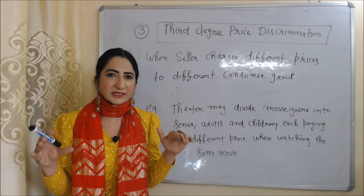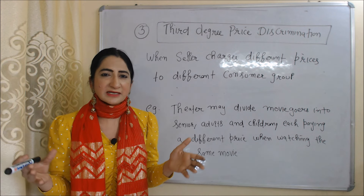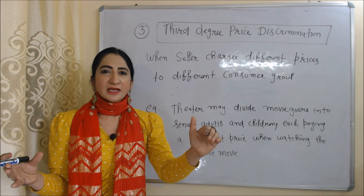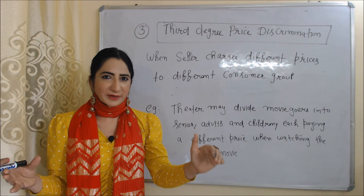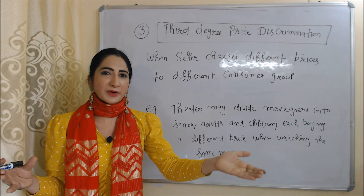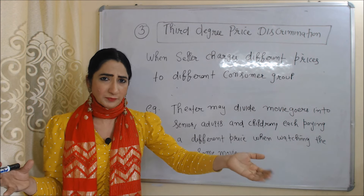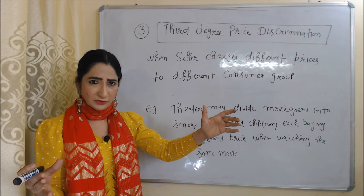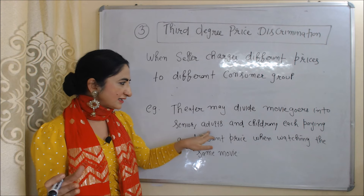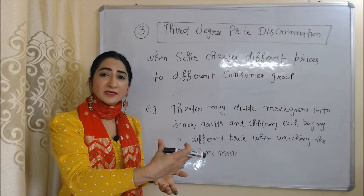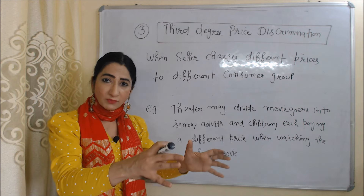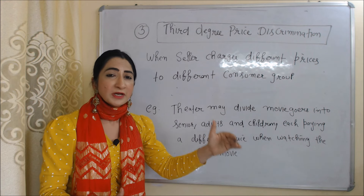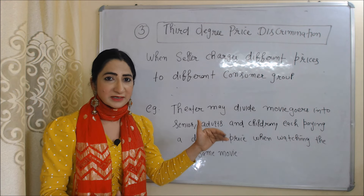In case of third-degree price discrimination, the seller charges different prices to different customer groups. For example, a theater may divide moviegoers into three customer groups: seniors, adults, and children, and each group pays a different price when watching the same movie. So here you can see the seller is charging different prices to different customer groups, which is called third-degree price discrimination.